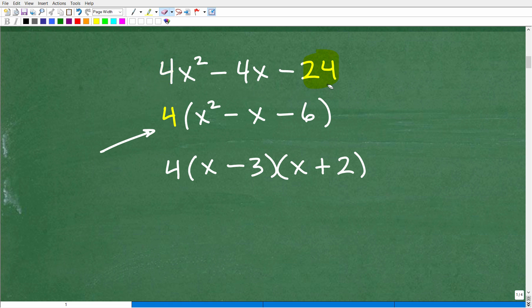So always factor out the GCF. Just don't start looking at this problem and try to factor right off the bat thinking, okay, I got to have one binomial times another binomial. No, always, always factor out the GCF. It's going to make your life a lot easier. So here I have four, which is the greatest common factor, times this trinomial.